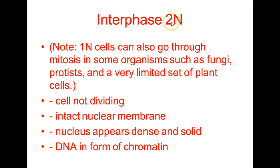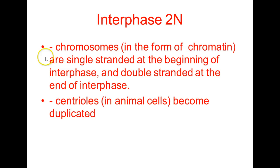During interphase, the cells are not dividing. You have an intact nuclear membrane; the nucleus appears dense and solid, and the DNA is in the form of chromatin. The chromosomes, in the form of chromatin, are single-stranded at the beginning of interphase and become double-stranded during the S substage — the synthesis substage — of interphase. The chromosomes are double-stranded at the end of interphase, and in animal cells the centrioles will become duplicated during interphase.